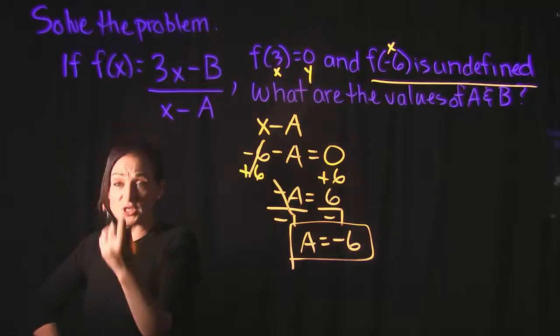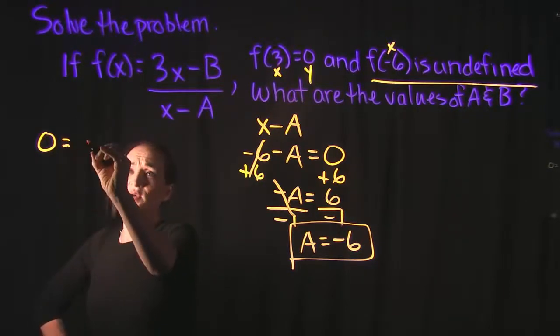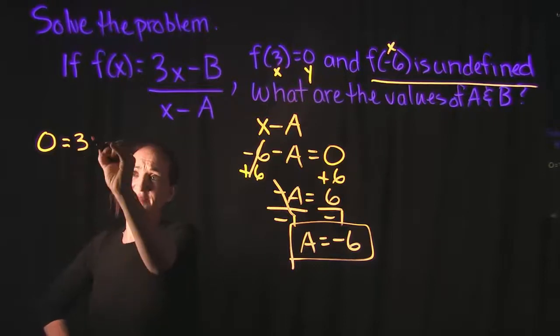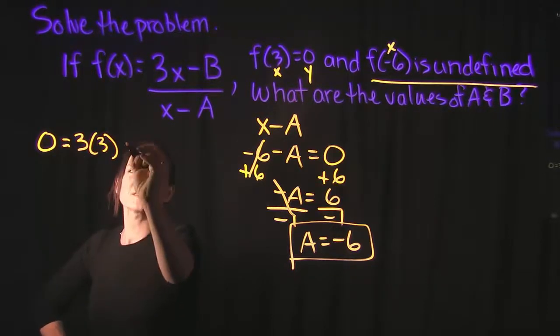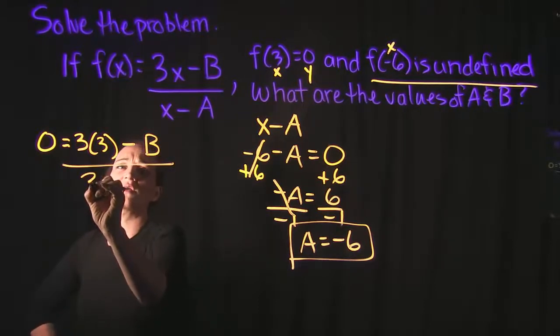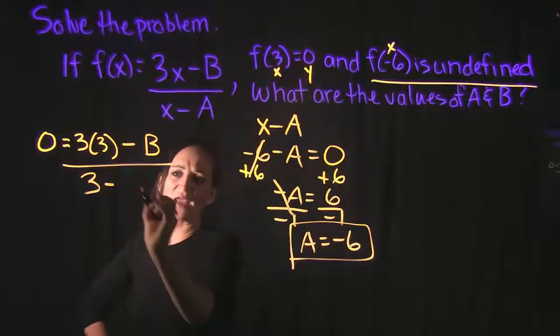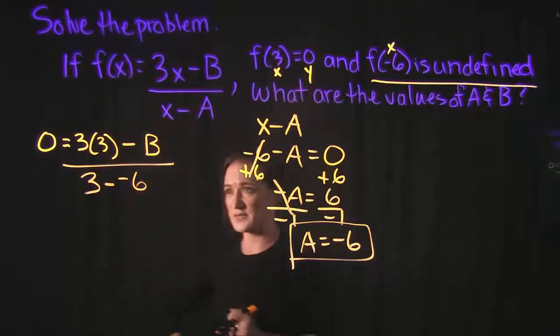So f of x, which is equal to y, is going to be 0. So that's going to equal to 3 times x, but we're plugging in a 3 for x. We are solving for b, so that's going to be over x is equal to 3, minus a, which is negative 6.